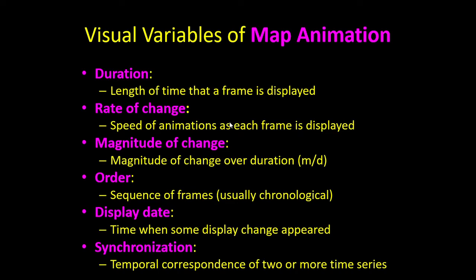Rate of change is the speed at which the animation progresses — similar to when you speed up or slow down a video or podcast. Magnitude of change is the amount of change that occurs from one frame to the next. If there's a big amount of change happening throughout the frames, the viewer might not be able to take it all in. Conversely, if not much is happening from frame to frame, it won't keep the viewer's interest and isn't showing anything of interest.